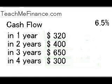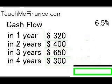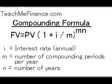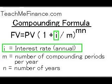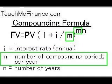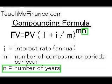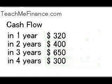What we're trying to figure out is how much money you're going to have four years from today. In order to figure all this out, you have to use this compounding formula. You can see the future value and the present value. I stands for the annual interest rate, M is the number of compounding periods per year, and N is the number of years. You have to go through each payment and figure out how much interest each payment is going to earn. Let's do the first payment first.